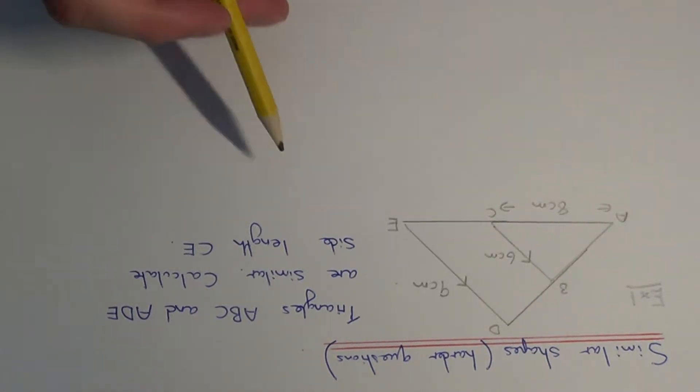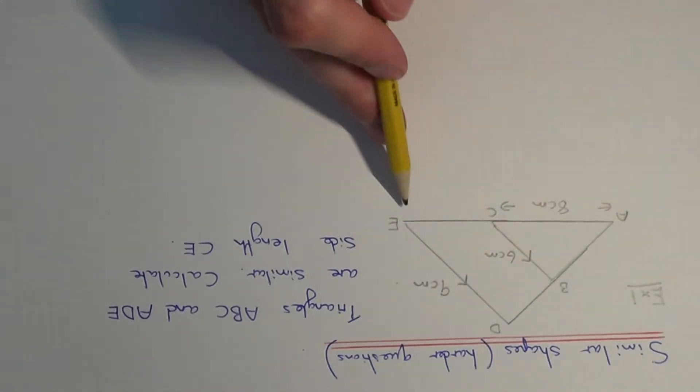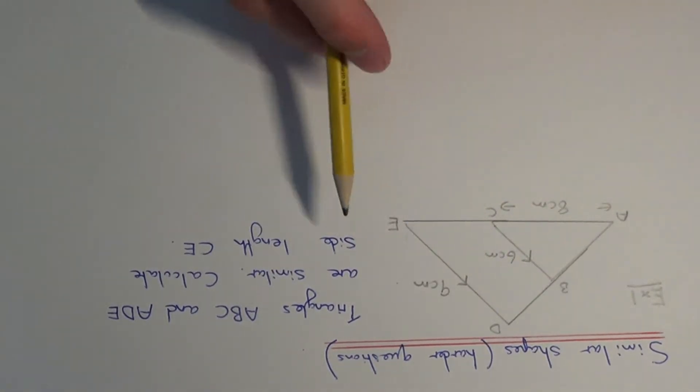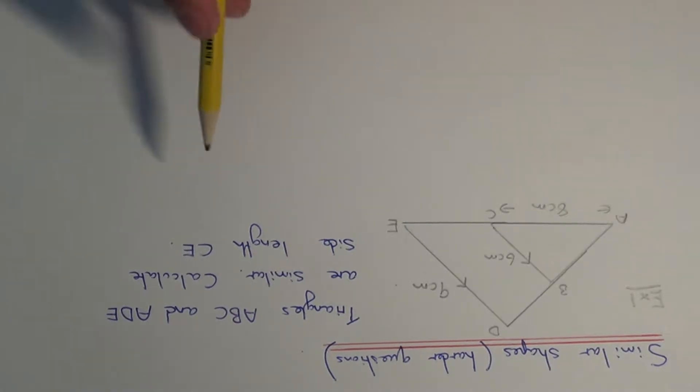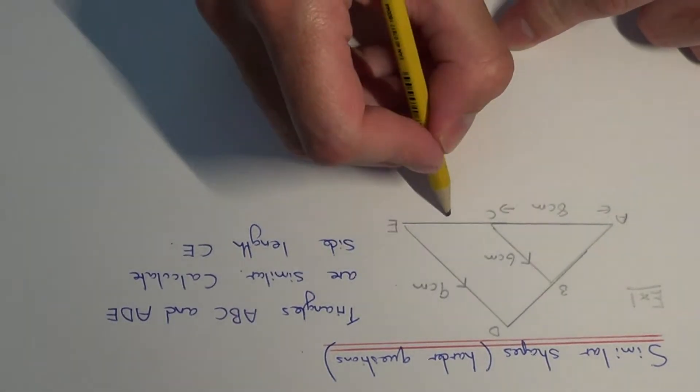Triangles ABC and ADE are mathematically similar and we've got to work out the side length CE.